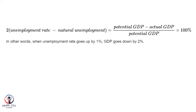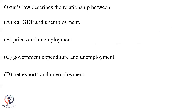If you are aware of the two variables — unemployment rate and GDP — there is an inverse relationship between real GDP and unemployment rate. Other related variables include government expenditure and net exports.